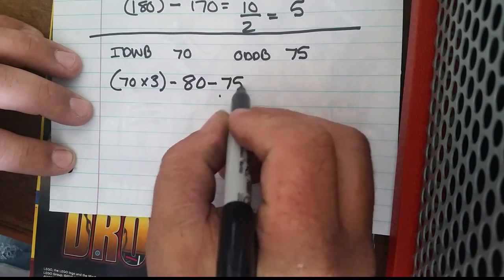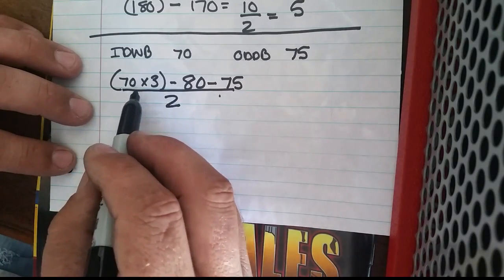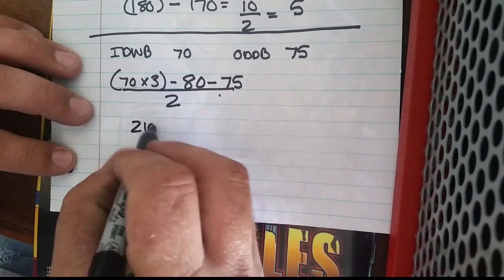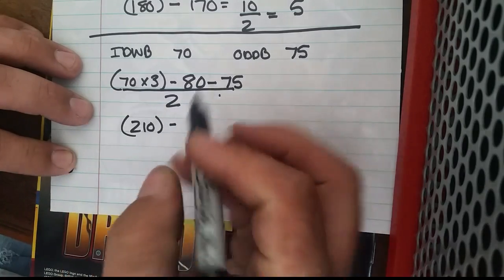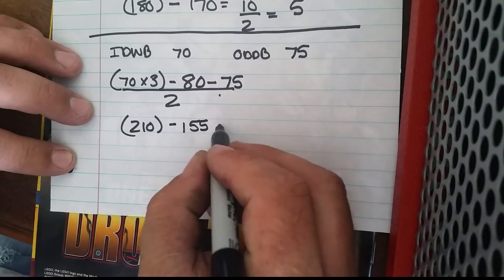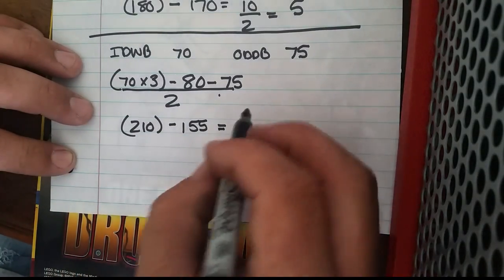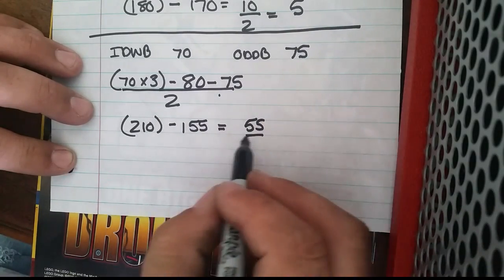So let's get our first line finished: we have 210 minus 155, and that will equal 55 over 2.